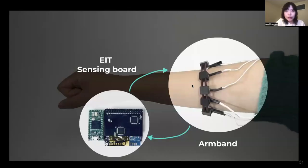To address those challenges, our system includes an EIT sensing board that is upgraded from open-source EIT kit, that can customize and optimize signals for each user, and an armband that ensures consistent skin-to-electrode contact across different users.